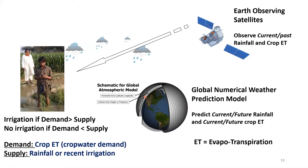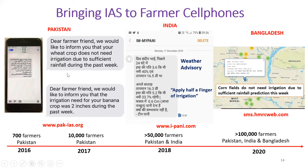Here are some text message interfaces used in different countries. In Pakistan, this is how farmers receive the text. This is the interface used in India, and this is a website used for Bangladesh.